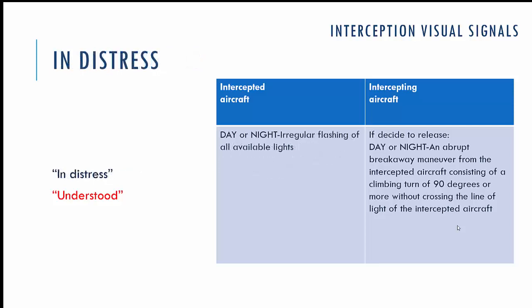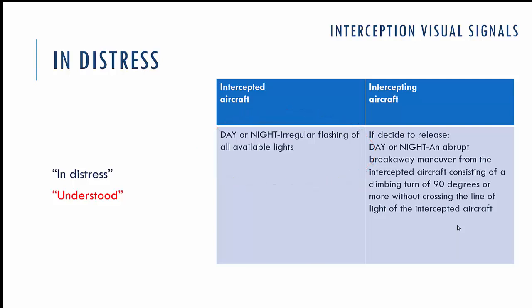The next visual signal represents 'in distress,' which looks like irregularly flashing all available lights. There is an important difference between 'cannot comply' — which uses regular flashing — and 'in distress' — which uses irregular flashing. In response to your visual signal, the intercepting aircraft will respond by giving you a 'you may proceed' instruction or another appropriate instruction.